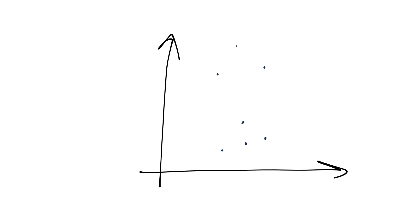To exemplify this, I'll draw a really simple data set with some data points. If you recall with k-means, when we started the algorithm we said we've got k — let's say k equals two — and we'd randomly select k feature sets and call those centroids or cluster centers. With mean shift, instead what we do is say every feature set is a cluster center.